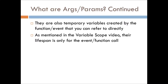Parameters are also temporary variables created by the function or event that you can refer to directly while inside that function or event. When we talked about variable scope in the Papyrus tutorials, we mentioned that the lifespan of the variable or parameters is only for the current event or function call. So every time you use the function you'll have that variable, but if you want to save it for later use you'll have to put it into a property or global variable.